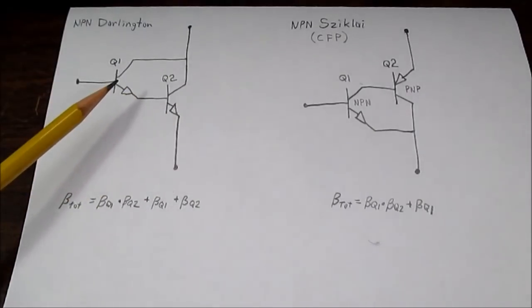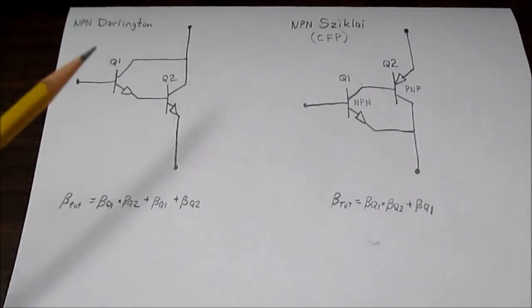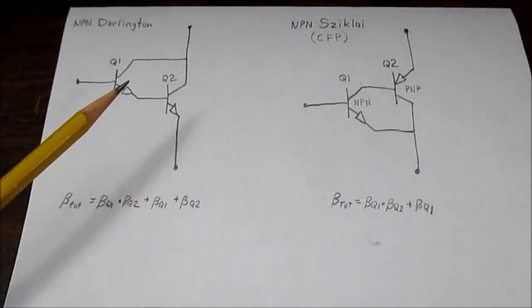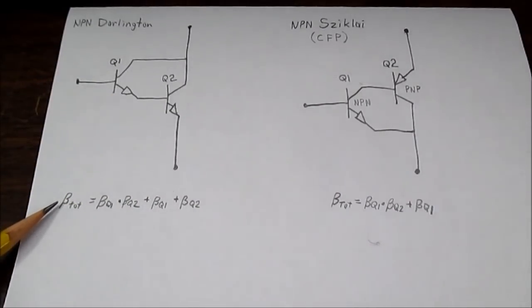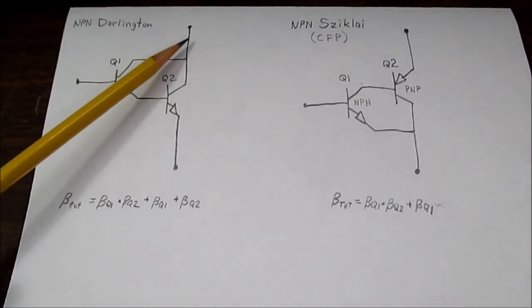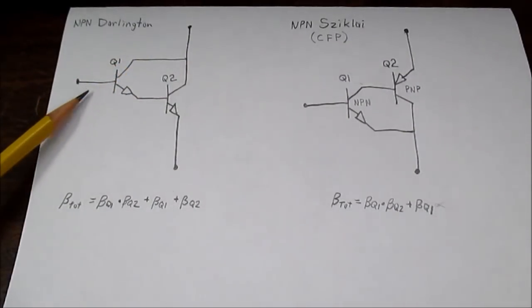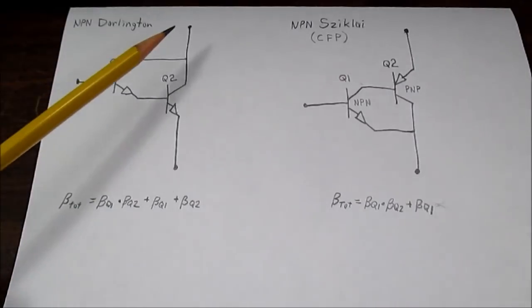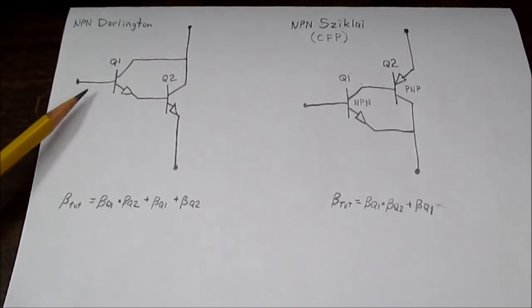And speaking of gain, we're talking about the current gain or the beta of the circuit. Beta is represented with a Greek letter, this B shape here with kind of a long tail. Beta is the ratio of the collector current to the base current.